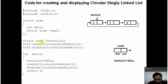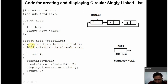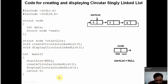And here, this is a pointer, startList, which will always point to the first node of my circular linked list. And these are the prototypes of the two functions that I am going to use in this program. One is createCircularLinkList — it is of type void, it won't return anything. And this is displayCircularLinkList. Obviously, this will create the linked list and this will display the circular linked list. I am initializing the startList pointer to be null.